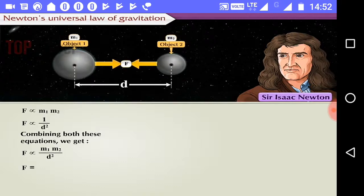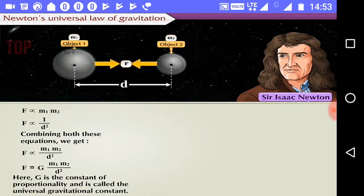F is equal to G into M1 into M2 upon D square. Here, G is the constant of proportionality and is called the universal gravitational constant.